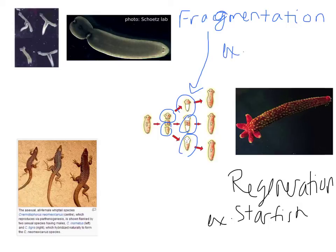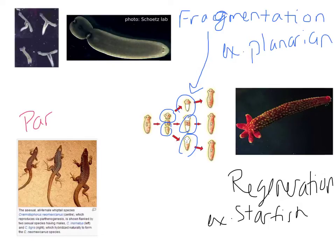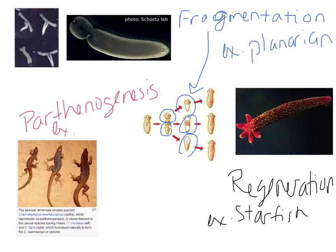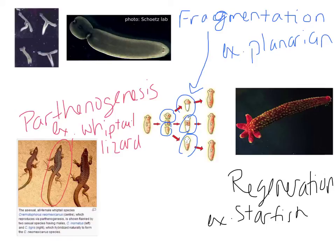Organisms that can do fragmentation would be things like planarians — the flatworms — where the entire organism breaks into distinct pieces, and every single little piece becomes a brand new organism. The last example listed is parthenogenesis, where basically an egg is laid that doesn't have to be fertilized. This female whiptail lizard will lay an unfertilized egg, and it will actually develop into offspring. Those are all examples of different kinds of asexual reproduction.